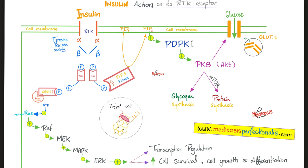RAS stands for rat sarcoma. Why did we call this RAF? Rat fibrosarcoma. MEK is the mitogen signal-regulated kinase. MAPK is the mitogen-activated protein kinase. ERK is the extracellular signal-regulated kinase.